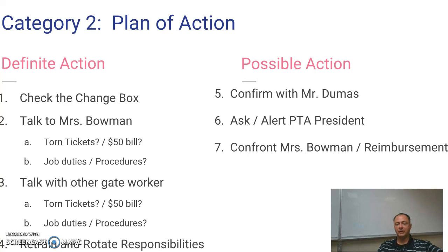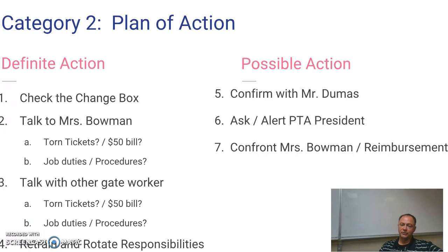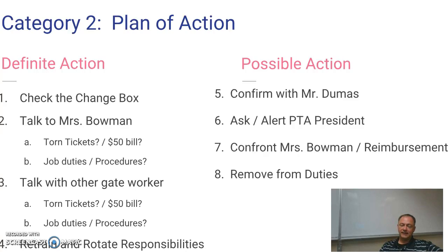If the evidence tends to show that there was wrongdoing, I would call Mrs. Bowman in and let her know there's $50 missing. She was the one handling this money, she reported it, and didn't report that it was missing. So does she have it? If not, we need to be reimbursed. And if she definitely did take funds from the school, she would need to be removed from her duties and not be allowed to collect money anymore.